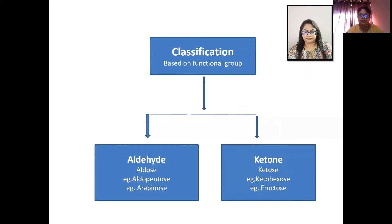I will discuss their structures and properties in detail. And if a keto group is present in a carbohydrate, it is called ketose, such as ketohexose. For example, fructose is a ketohexose.